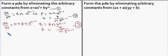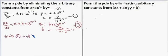Now we have to form the partial differential equation by eliminating the arbitrary constants. We are having a substitution for a and a substitution for b. Substituting equations 2 and 3 into equation 1, we get the following.